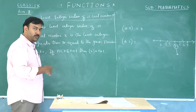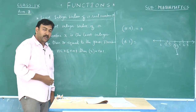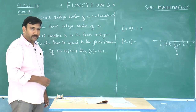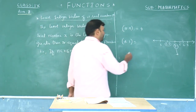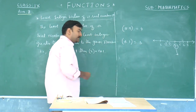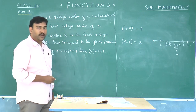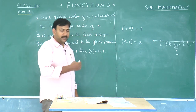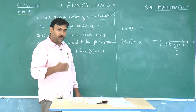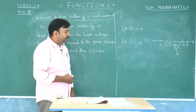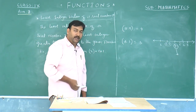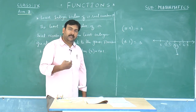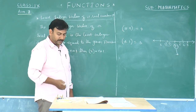2.3 lies between 2 and 3. The least integer greater than the given number 2.3 is going to be 3. Always we need to take the number on the right side. Whatever number is given, try to understand where it lies between two integers and always take the number on the right side. The greatest integral value is taken on the left side; the least integral value is taken on the right side.